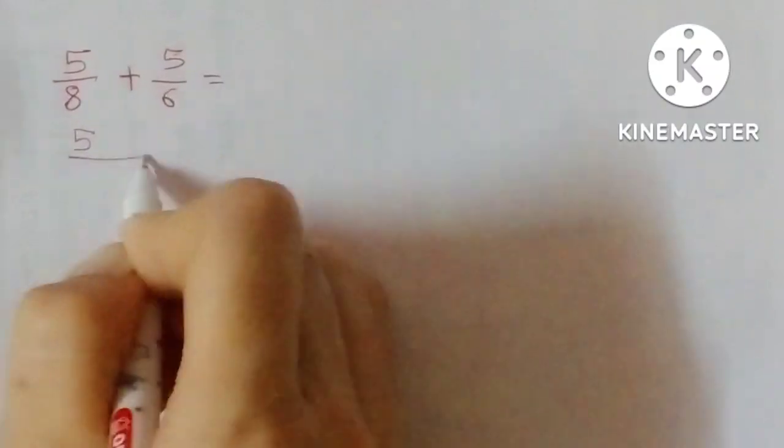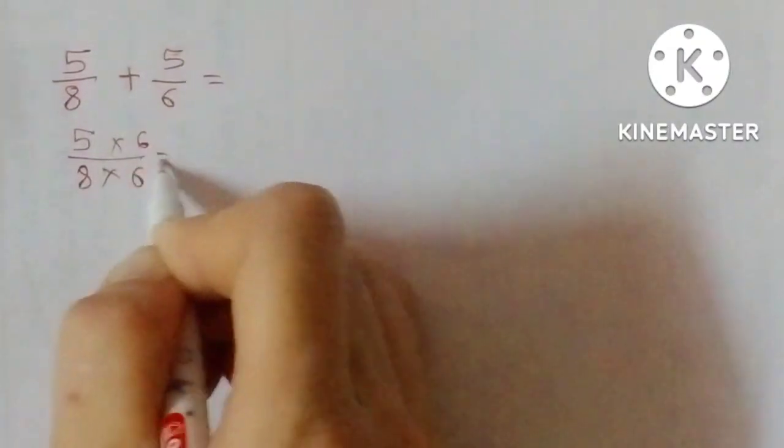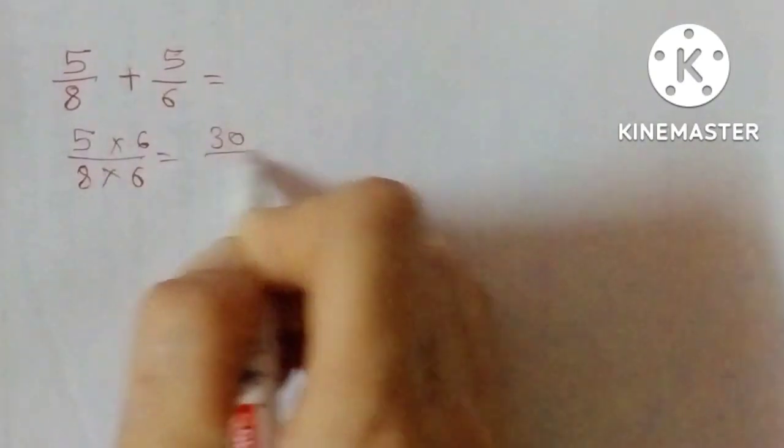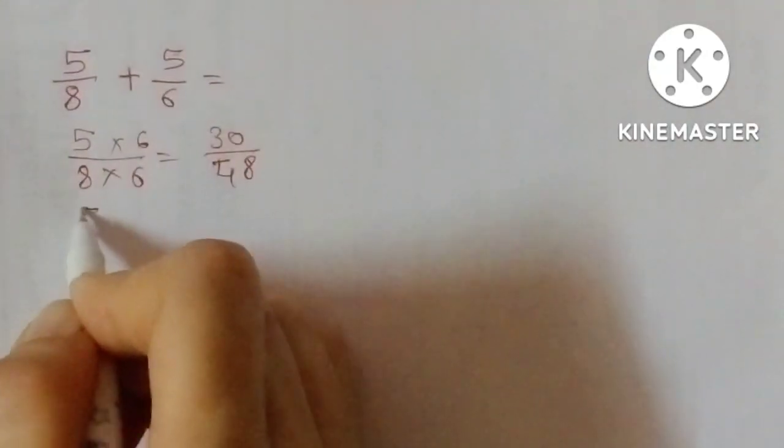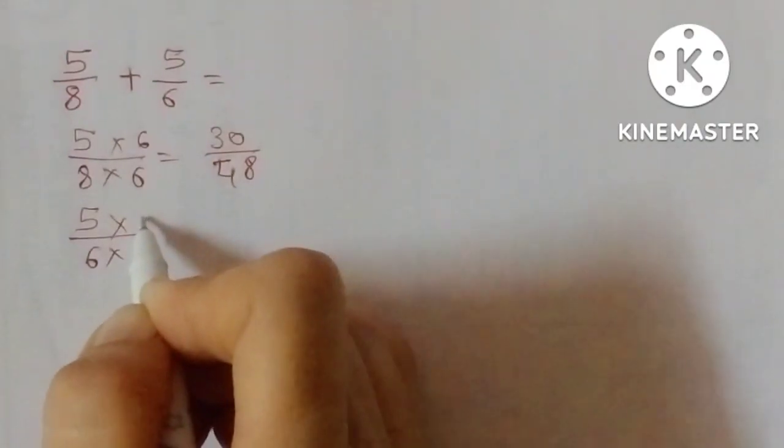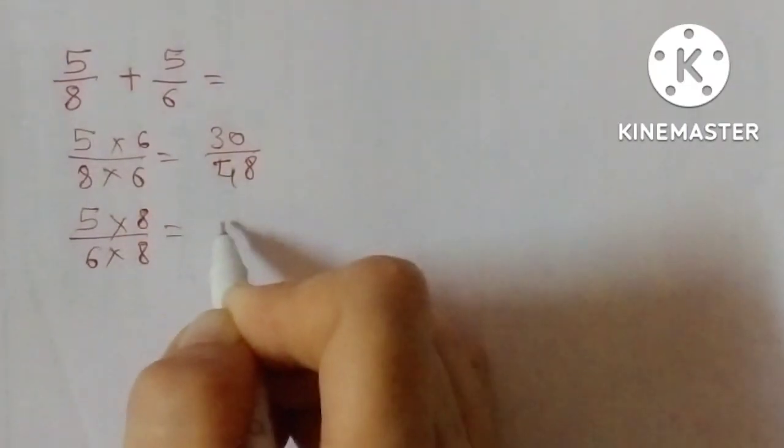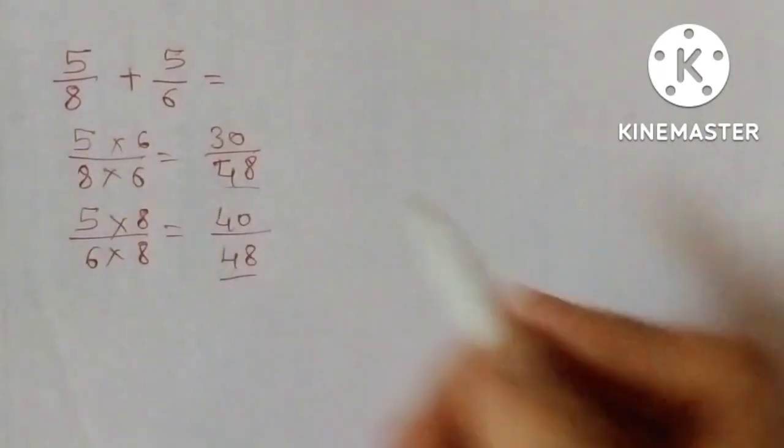5 upon 8 times 6: 5 times 6 is 30, 8 times 6 is 48. 5 upon 6 times 8: 5 times 8 is 40, 6 times 8 is 48. Denominators are same.